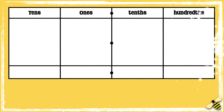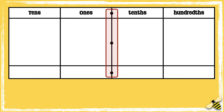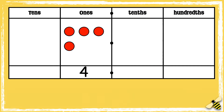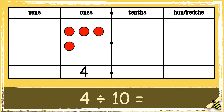Here is a place value grid. Tenths and hundredths sit beyond the decimal point, so before the point we have the whole number and after the point we have the part. Here is the number four.